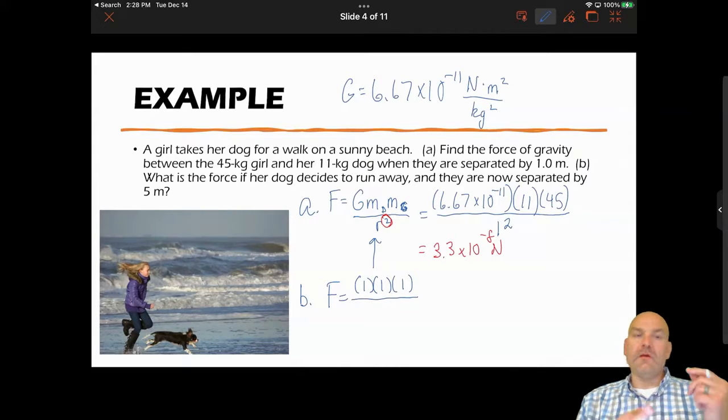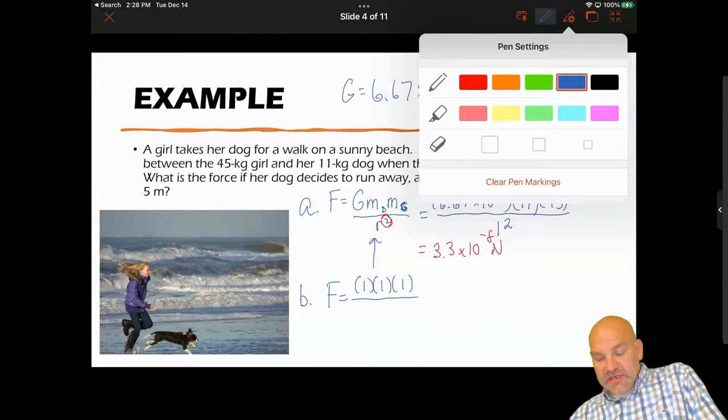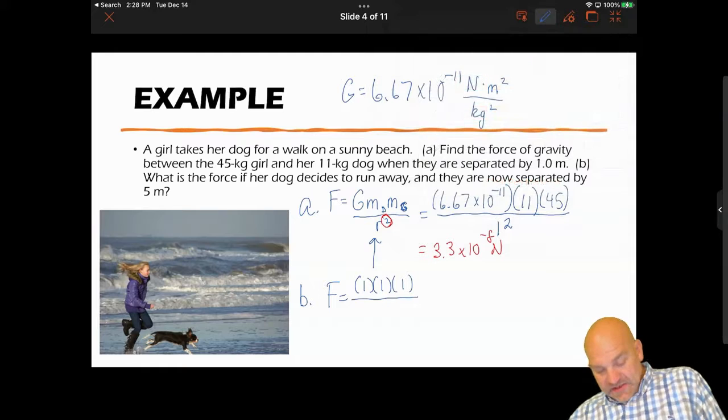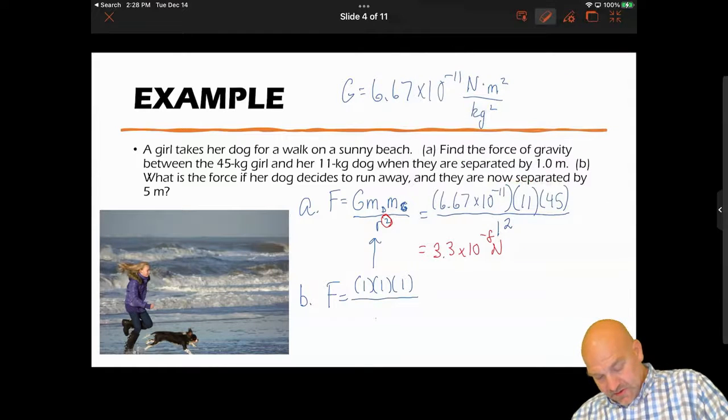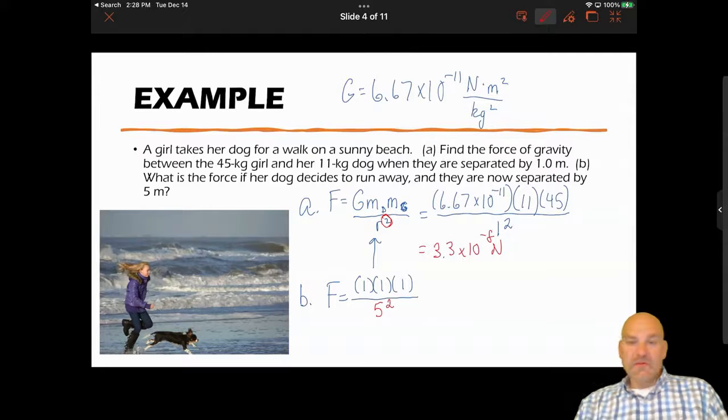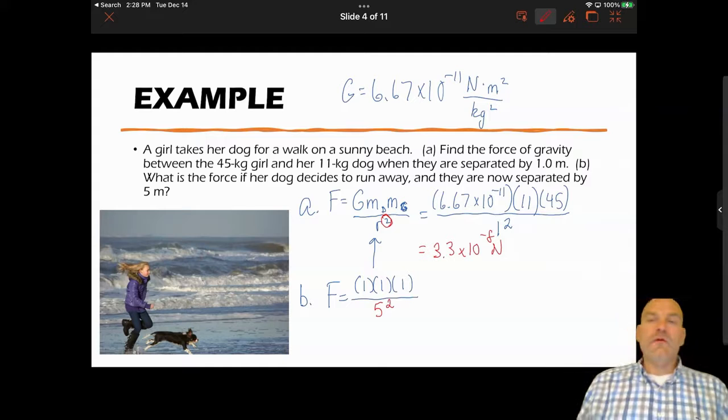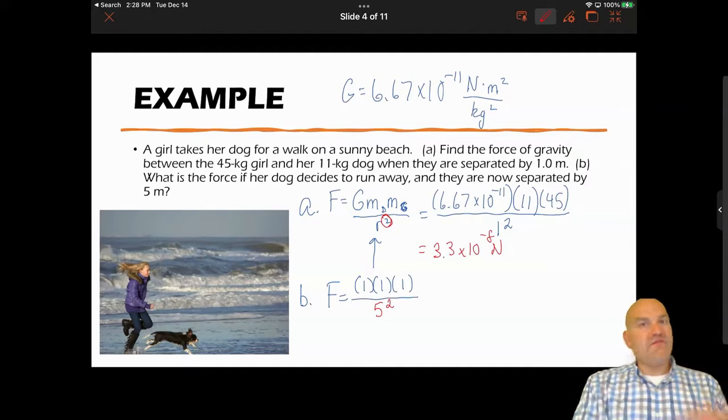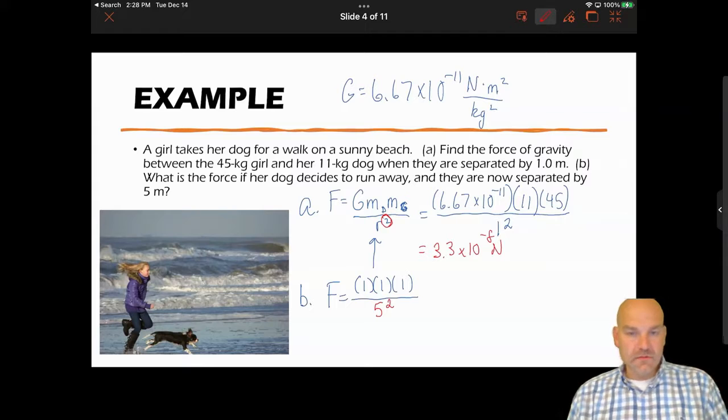My numerator stays the same - it's the same dog, same girl, and that G value is a constant, so that doesn't change. But what changed was the distance between them. I want to do that in a different color so you can see, this is the value that changes. So five meters is five times greater than the one meter. Remember, it's a factor, not we're not adding or subtracting. A factor is multiplying.